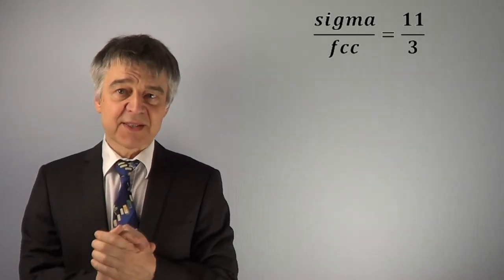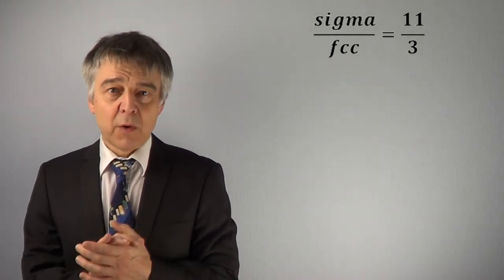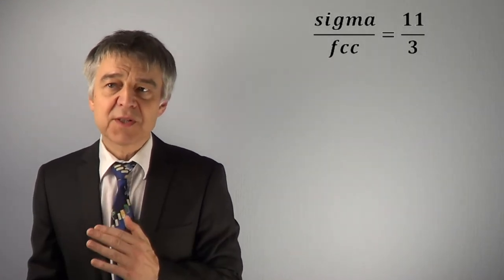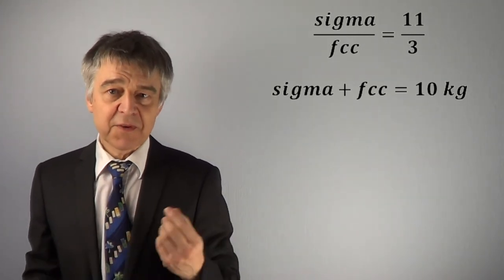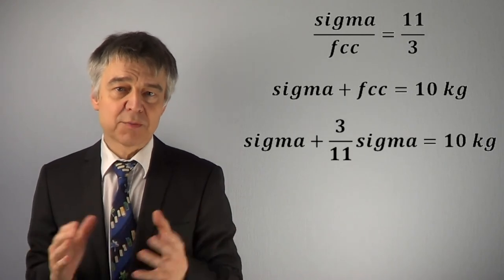The sum of the masses of sigma and FCC phase is 10 kg. We can use these two equations to calculate the mass of the sigma phase to about 7.8 kg, corresponding to approximately 78 percent.